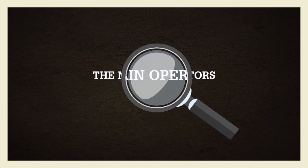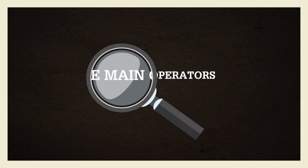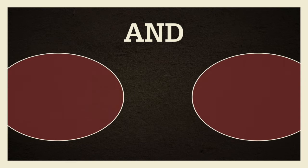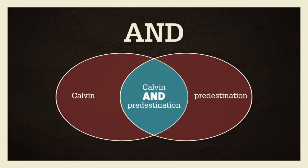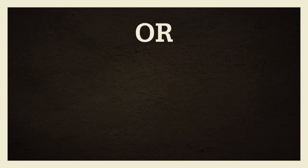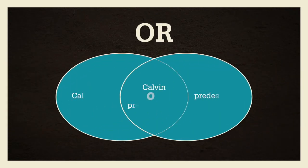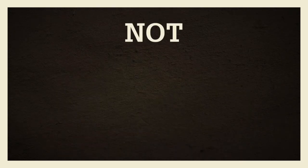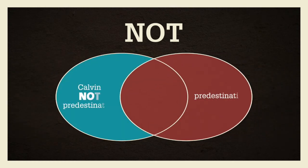Here is a list of the main operators and search techniques. AND: the two concepts will both appear in the results. OR: one of the two concepts, or both concepts, will appear in the results. NOT: the term that follows will not appear in the results.